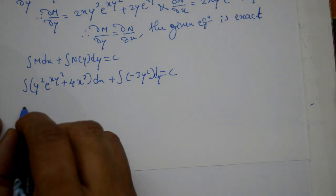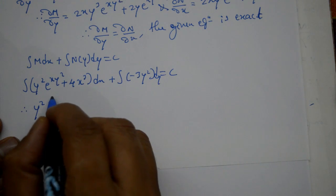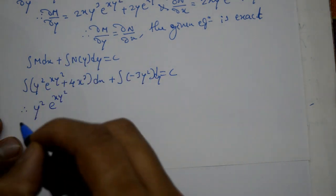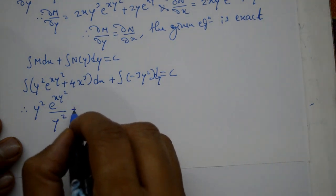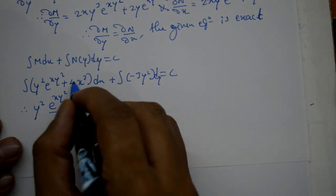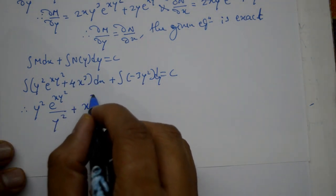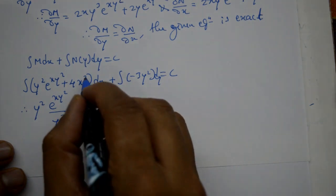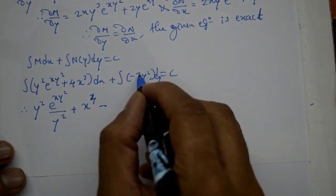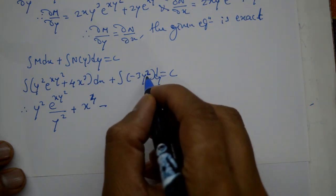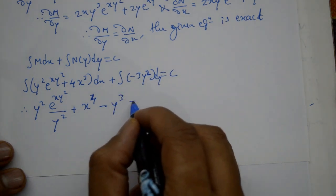Integration of M: y² · e^(xy²) + 4x³ dx. y² constant hai, e^(xy²) ka integration with respect to x — divide by y² (constant term) — e^(xy²) / y² aega. Plus 4x³ ka integration: x⁴/4 — 4 cancel ho jayega — x⁴ bacha ega. Plus integration of −3y² with respect to y: 3 cancel ho ke y³ bacha, so minus y³ equal to c.